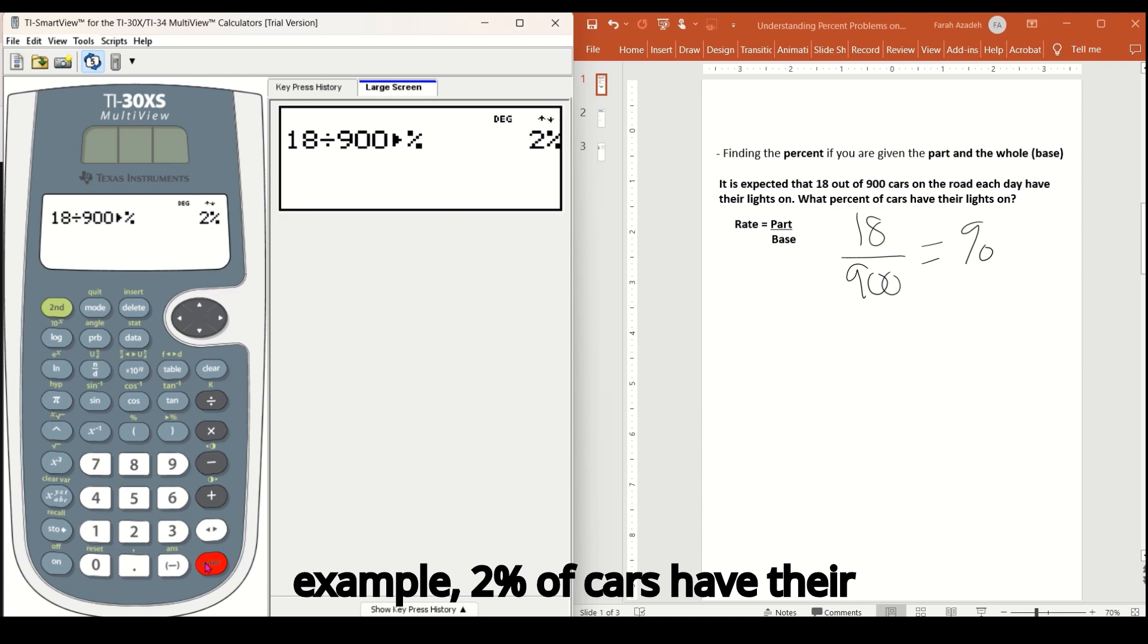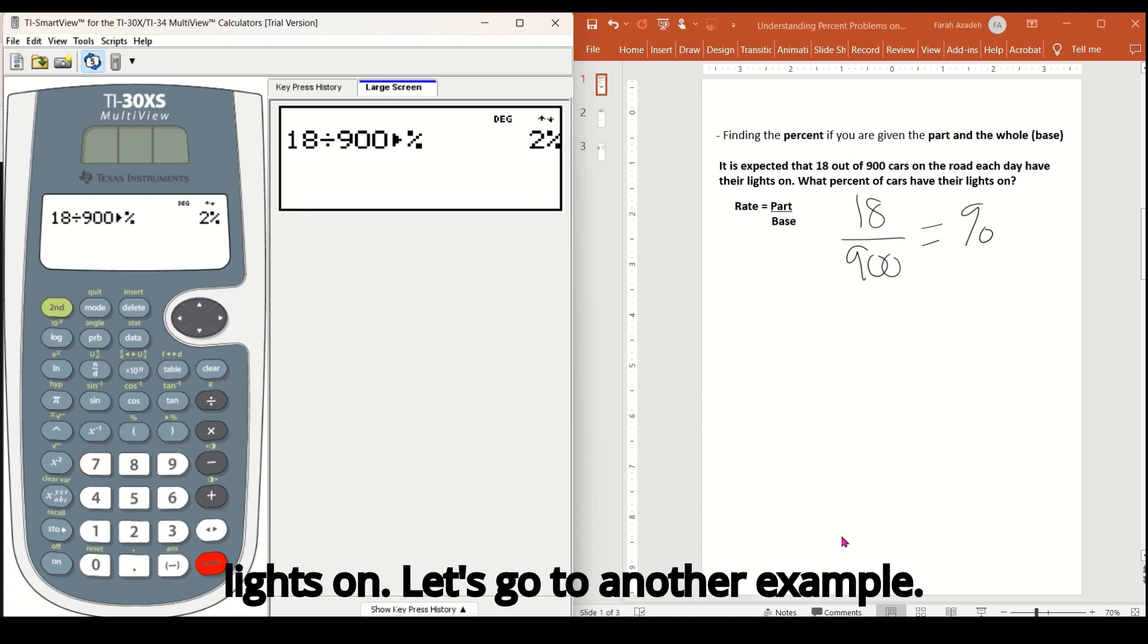And then I'm going to click enter and notice that the answer is 2%. So for this problem, 2% of cars have their lights on. Let's go to another example.